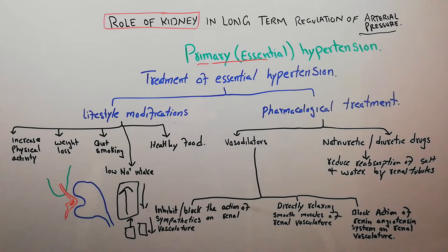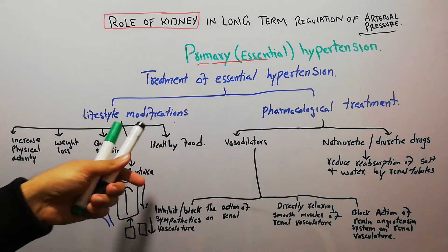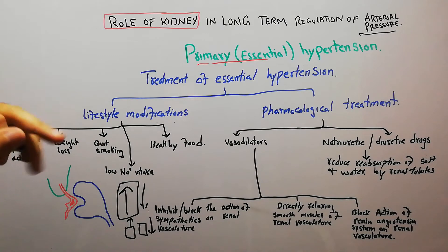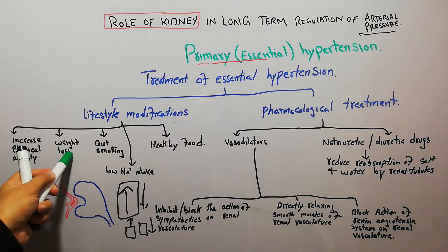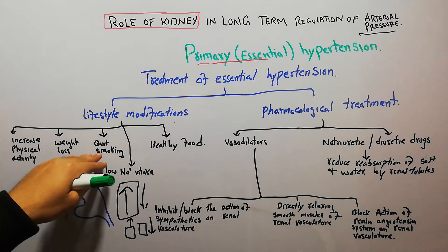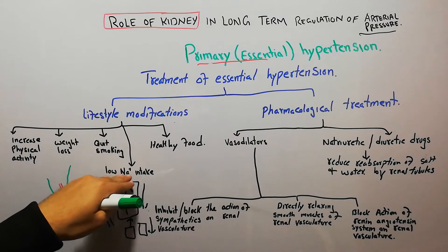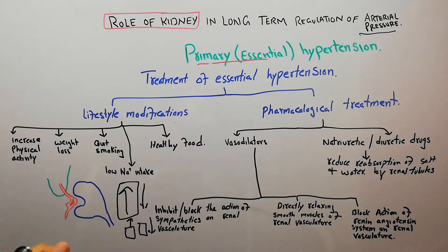By decreasing cardiac output we are helping the heart, which in turn decreases hypertension. The lifestyle changes that help treat primary essential hypertension include increasing physical activity, weight loss for those with obesity, quitting smoking and alcohol, and increasing intake of healthy foods containing fibers and low carbs.